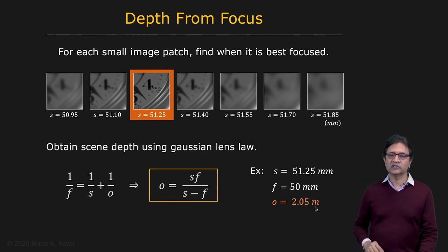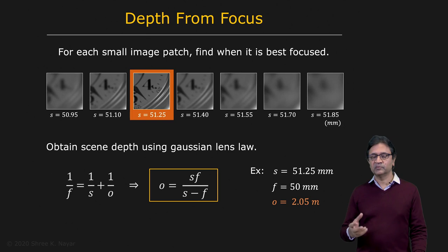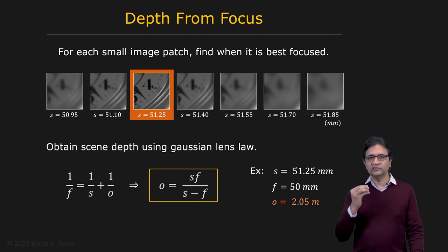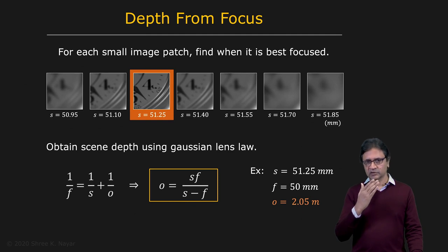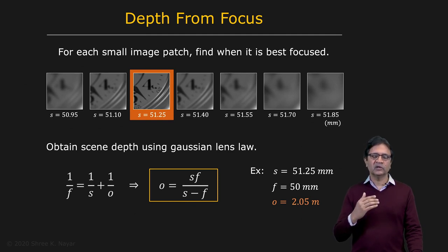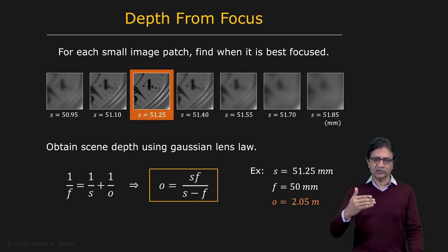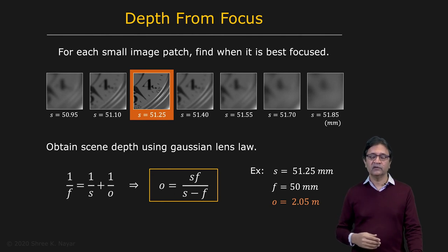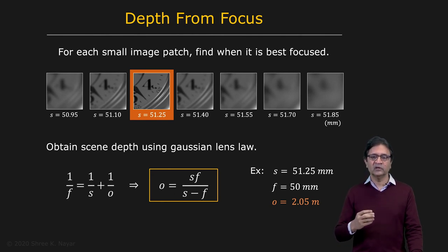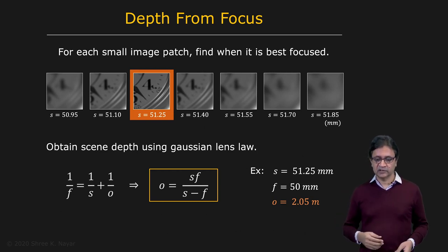By making very small changes behind the lens in terms of the position of the sensor, you can actually realize significant changes in the position of the plane of focus in front of the lens in the scene. Therefore, with these tiny changes to the imaging system, you're able to recover the structure of a very large three-dimensional scene.